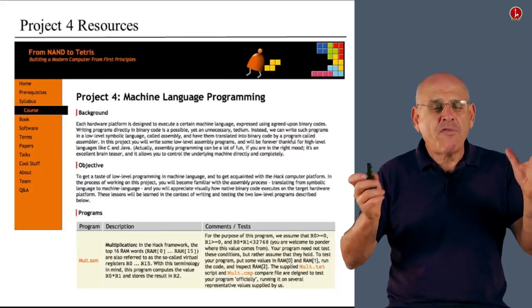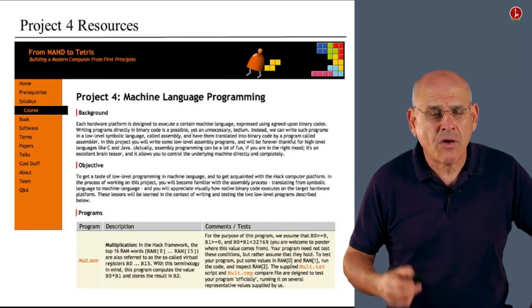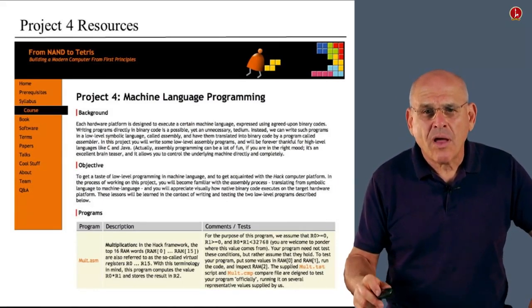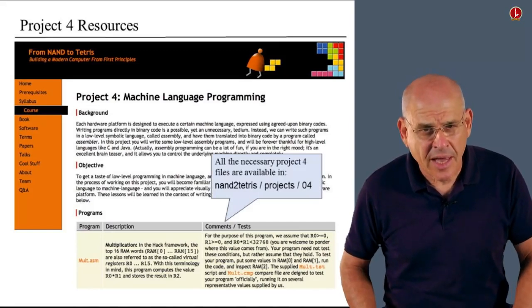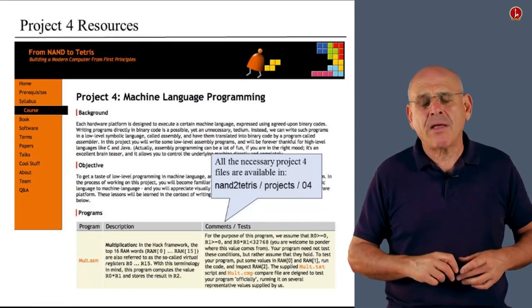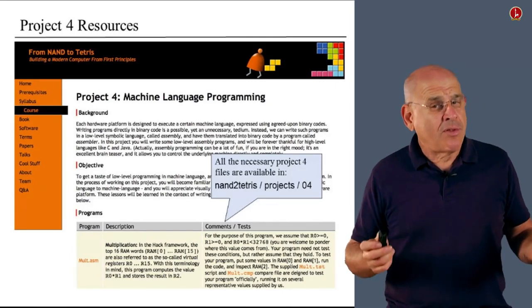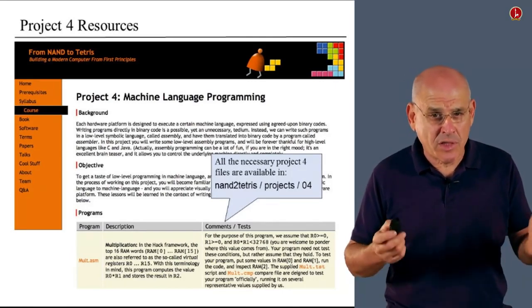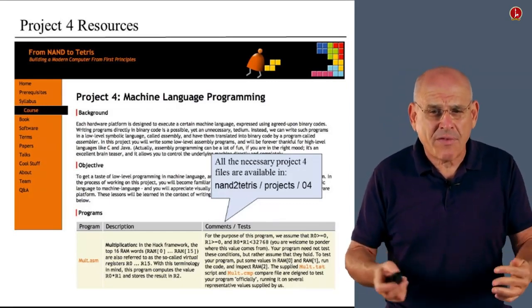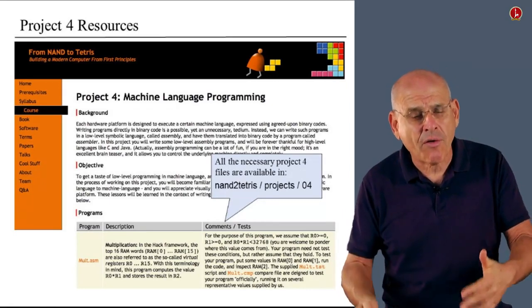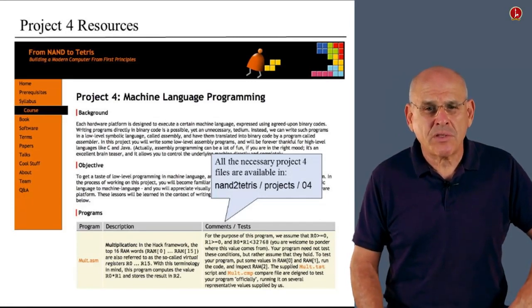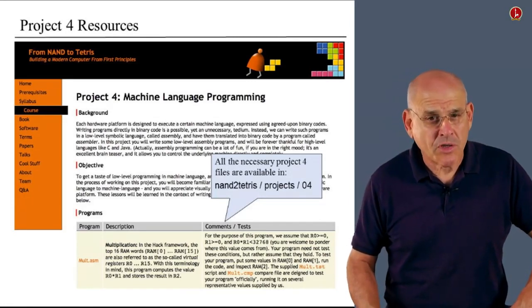All right, where do you find everything you need? Well, as usual, you go to the NAND to Tetris website. You look at project four. All the files that you need for this project are described in this webpage. And there's no need to download anything because if you downloaded the software suite at the beginning of the course, you now have on your personal computer a directory called project slash 04, and this directory already contains all the files that you have to use and manipulate in project four.